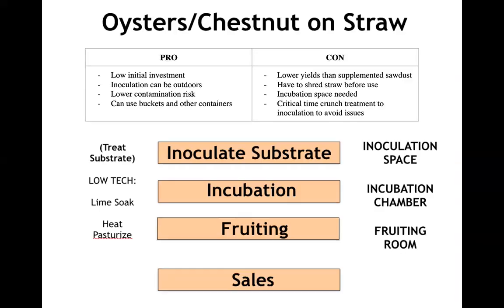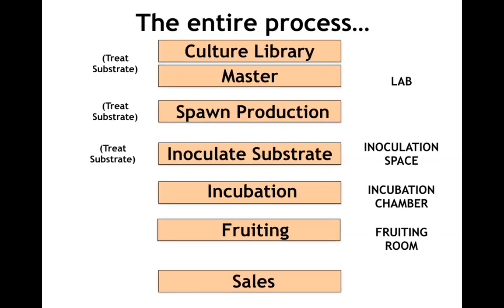To summarize oysters on straw — pros: significantly low initial investment, inoculation and treatment can be done outdoors, lower contamination risk, and reusable containers are possible with extra effort. Cons: lower yields than supplemented sawdust, straw must be shredded before use, you do need an incubation space, and there's a critical time crunch between pulling material from treatment and inoculating — outdoors the contamination potential in that interim is high, so you need to be very efficient.